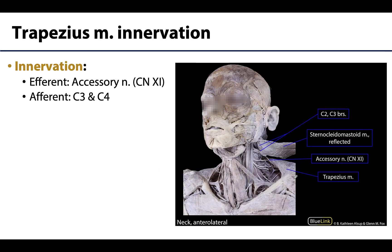The trapezius is similar to the sternocleidomastoid muscle in that it has separate afferent and efferent innervation. It is efferently innervated by the accessory nerve, cranial nerve 11, and as we recall, the accessory nerve is solely efferent. The afferent innervation derives from fibers of cervical spinal nerves C3 and C4. You can really see in this image the accessory nerve extending between the reflected sternocleidomastoid heading to the trapezius, hitting its two main targets.